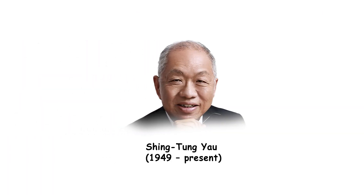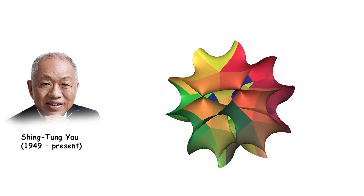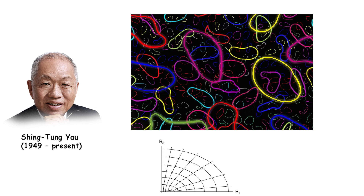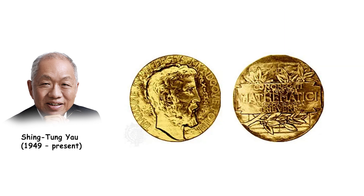Shing-Tung Yau is a Chinese-American mathematician known for his contributions to differential geometry and geometric analysis. Yau's proof of the Calabi conjecture, which demonstrated the existence of Ricci-flat Kähler metrics, has profound implications in both mathematics and theoretical physics, particularly in string theory. He was awarded the Fields Medal in 1982.